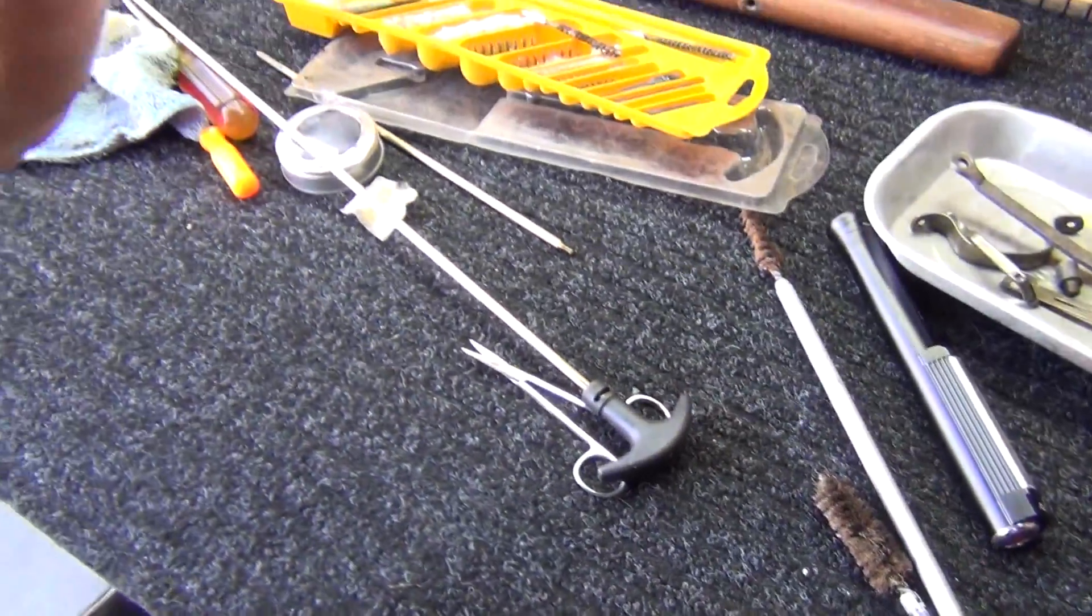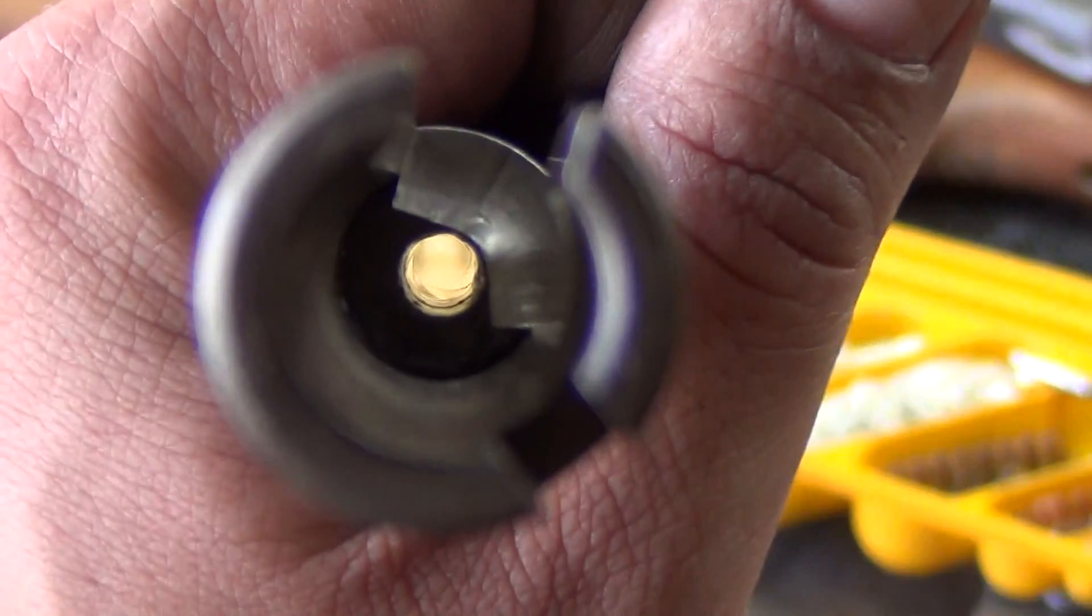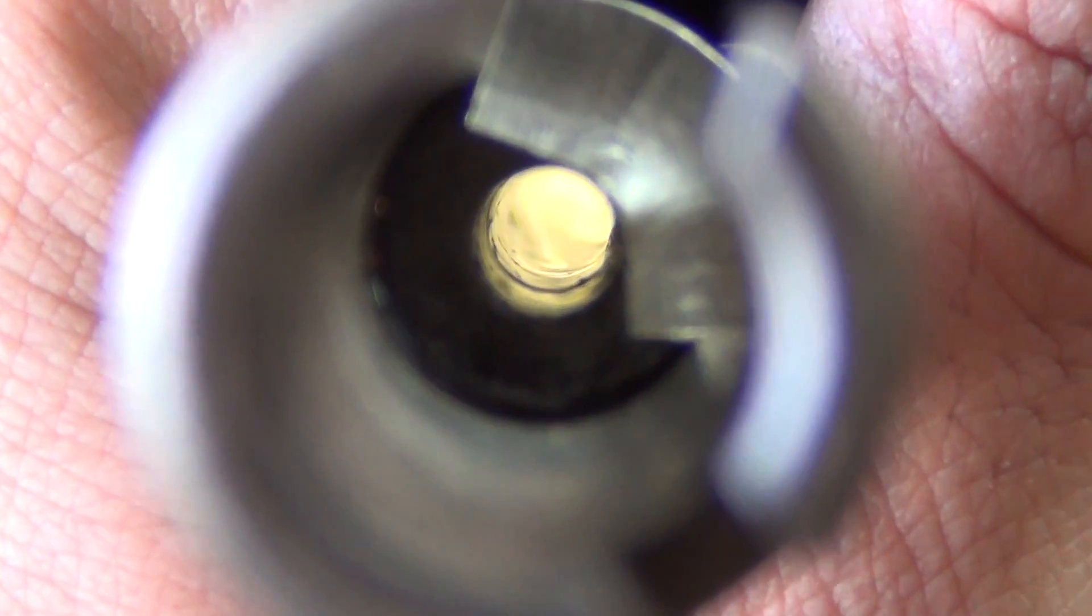Looking inside the barrel, you might be a little surprised. You can actually see rifling in there now, which before you could not.